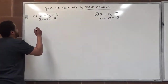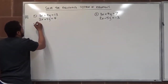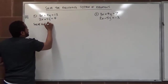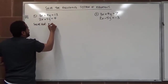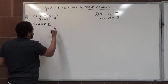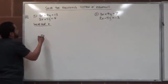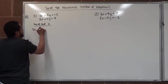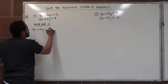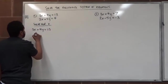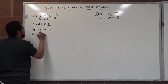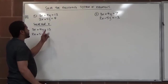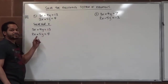We're going to start by solving for x. To solve for x, we have to cancel the y. Here are our two equations: 3x plus 4y equals 13, and 2x plus 5y equals 4. To solve for x, I need to cancel the y.